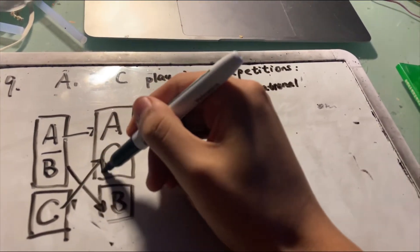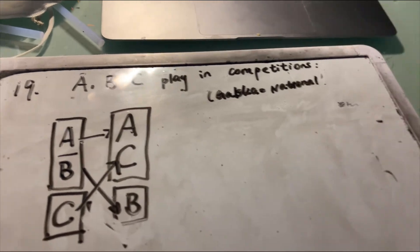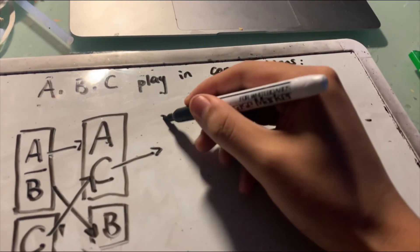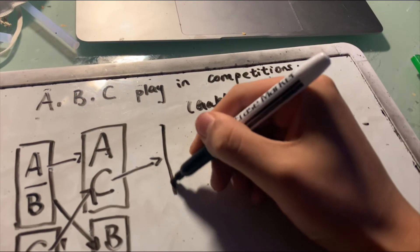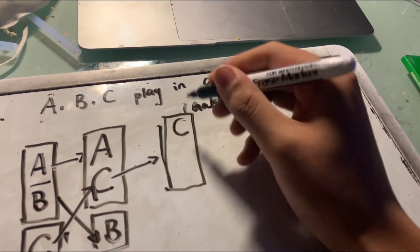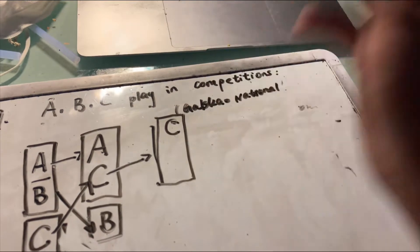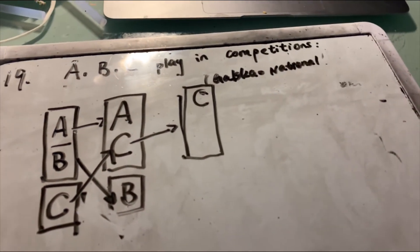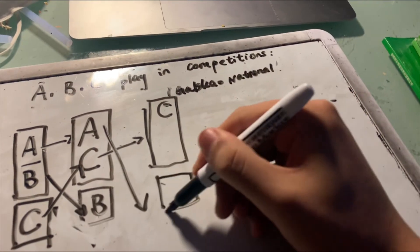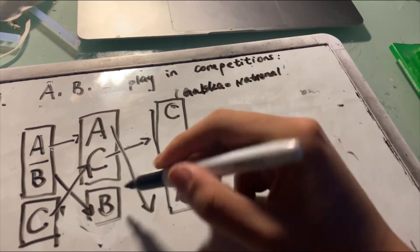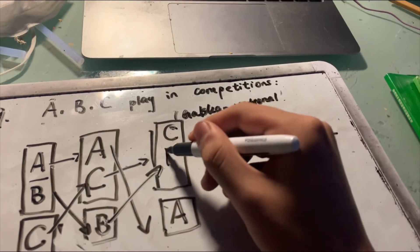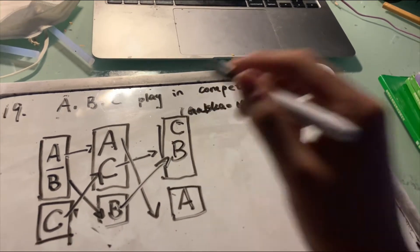Let's assume that in this round, C wins. C will also play in the next round again. A loses, so he will draw a bye. And B, since he was the bye in the previous round, will become the participant who competes next.